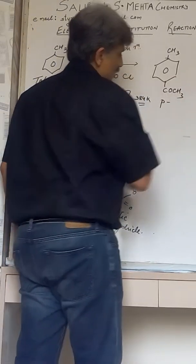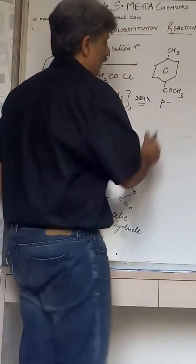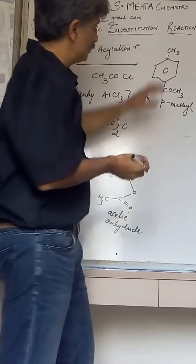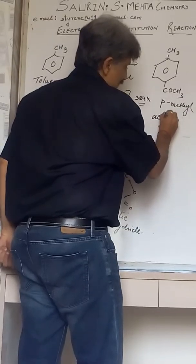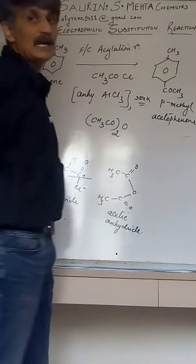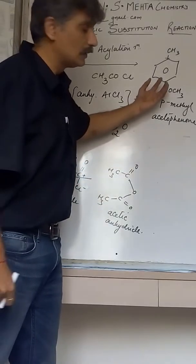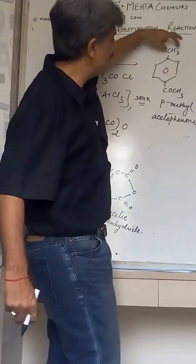You can name the compound as para - the position is opposite to each other. This is the methyl part, so we will write para-methyl. And on benzene when you have COCH3, the compound is known as acetophenone. So you can name the compound as para-methyl acetophenone.